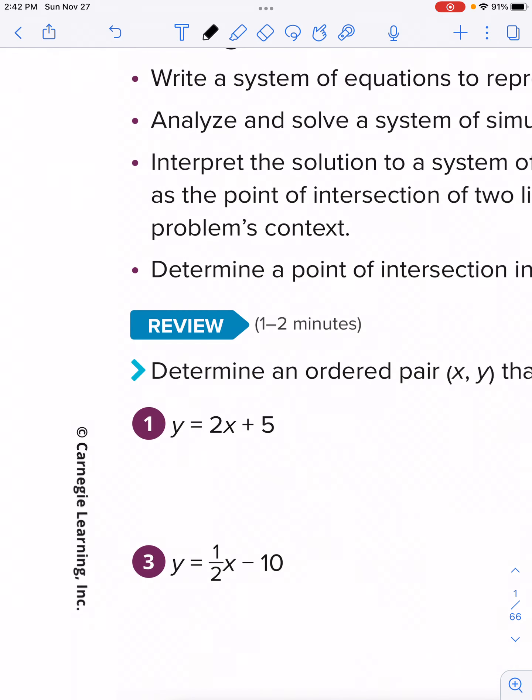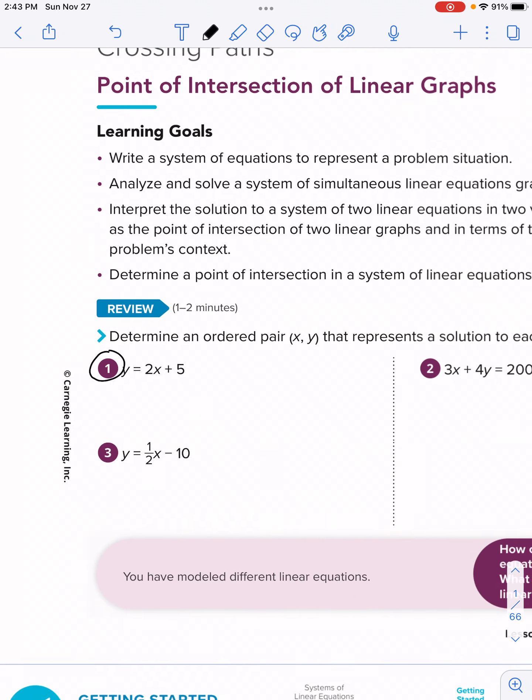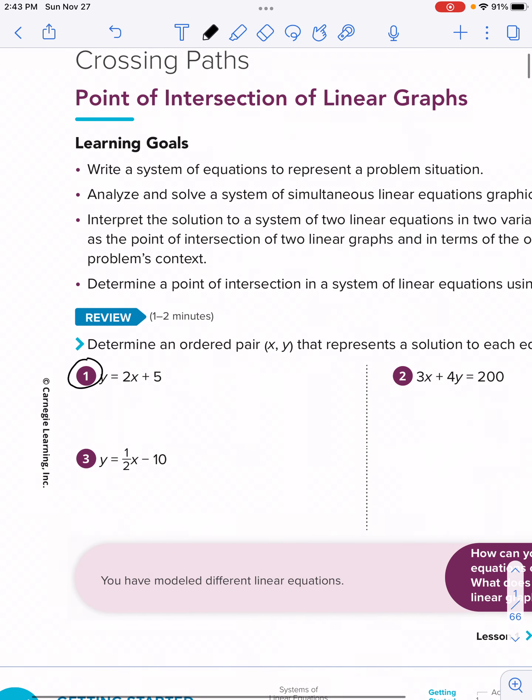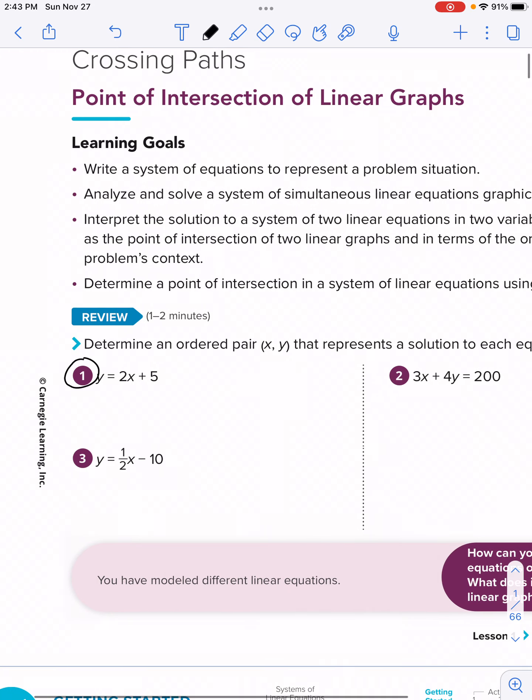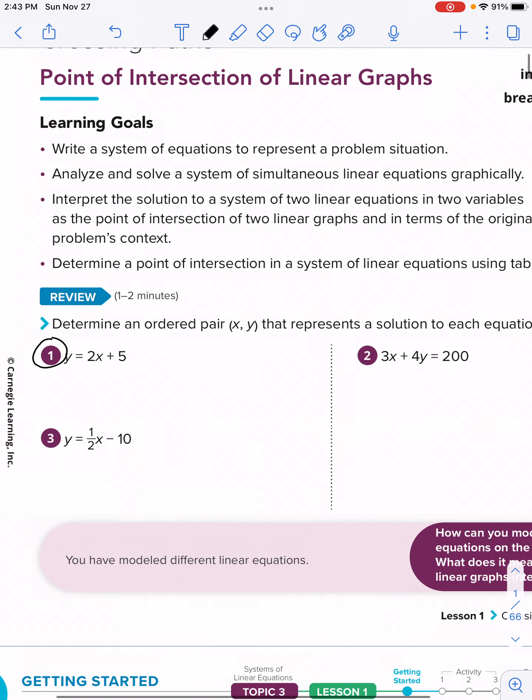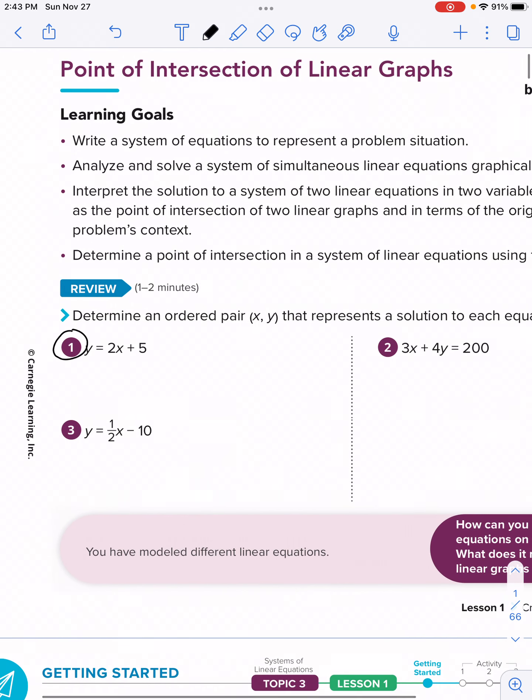Let's do number one. We have the equation y equals 2x plus 5, and the direction tells us determine an ordered pair (x, y) that represents a solution to each equation. And to remind yourself, for a solution, a solution is just a number or a set of numbers that make the equation true or satisfies the equation.